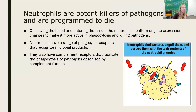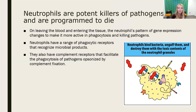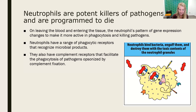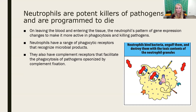Neutrophils are very effective at the work they do. They'll engulf as much bacteria as they can and then they're programmed to die. Once they leave the blood and enter the tissue, their gene expression changes and they spend a lot of their energy making granules, toxic contents, and superoxides to degrade anything they phagocytize. They have complement receptors to pick up C3B on the surface of pathogens, because neutrophils love opsonins — they like a good tasty bacteria covered in C3B.